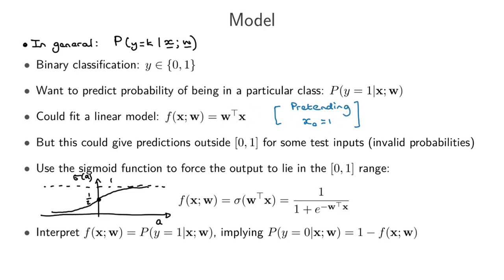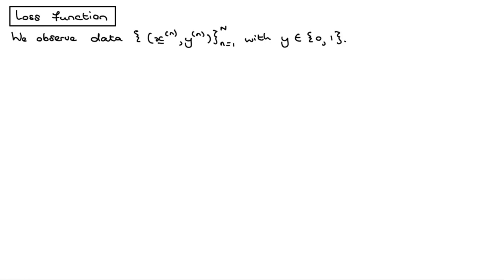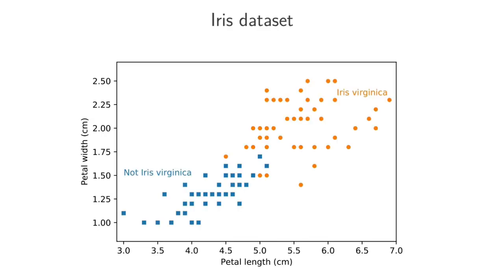Let's consider the loss function we'll use to figure out how to set the parameter vector w. We're given a dataset with input features x — which can in general be a vector — and output labels y, which for binary logistic regression are just 0 or 1. To make this concrete, consider the iris dataset. We have two features: petal length as x1 and petal width as x2. The binary classification task is to predict whether a flower is an iris virginica or not.